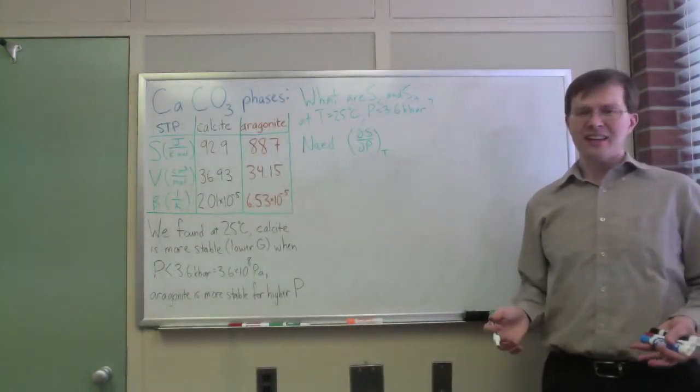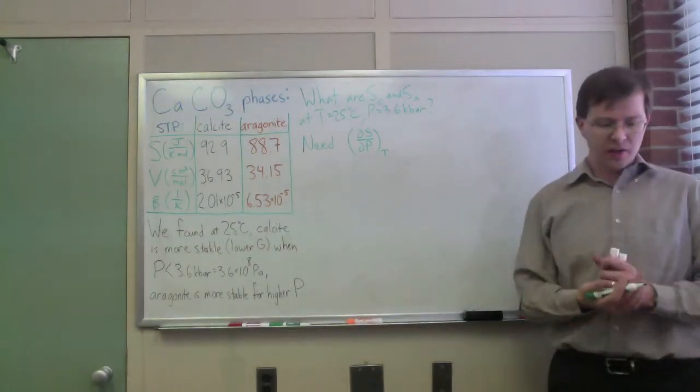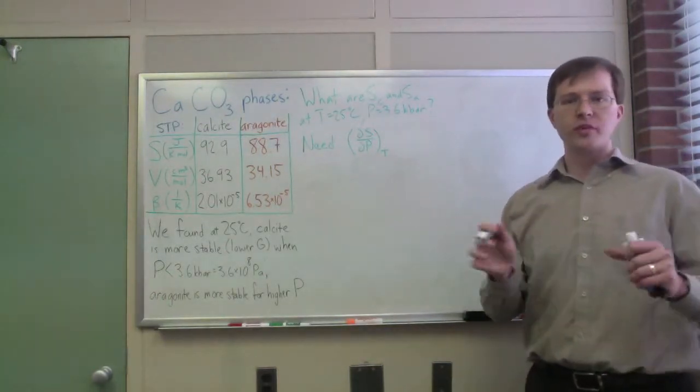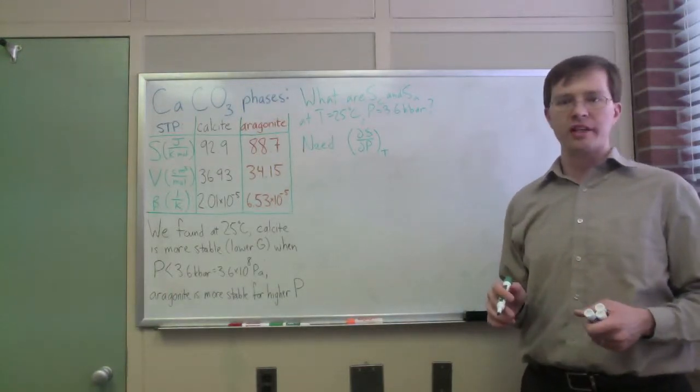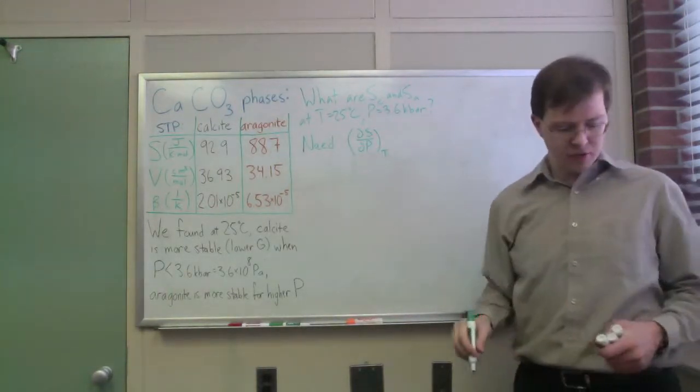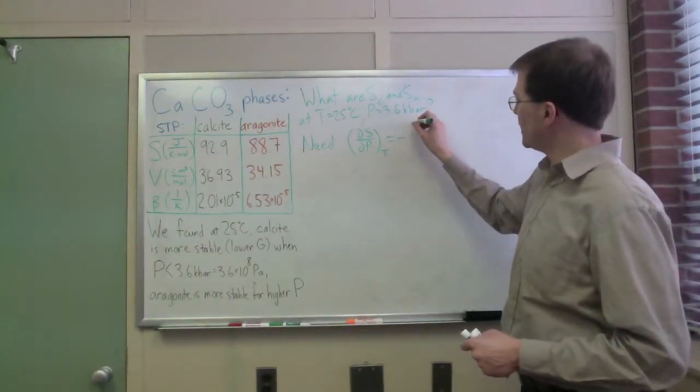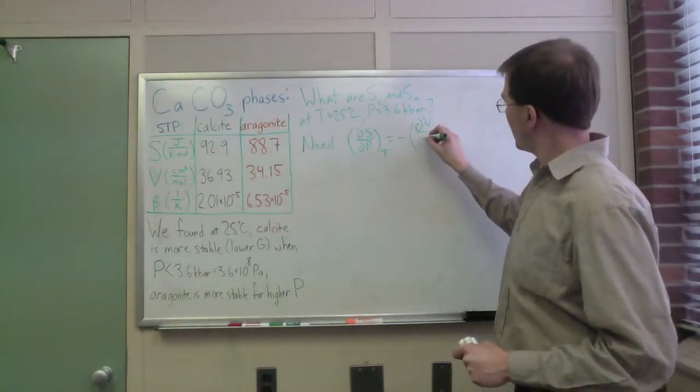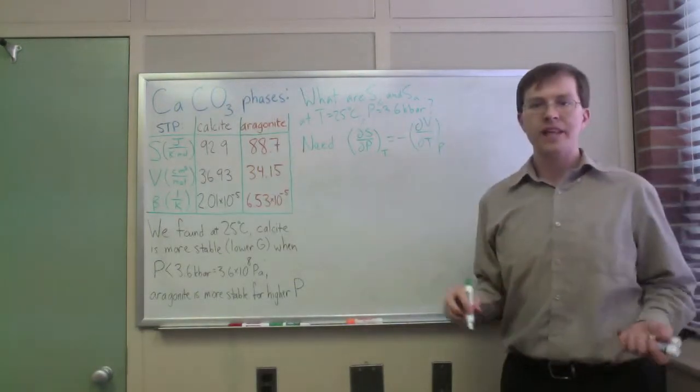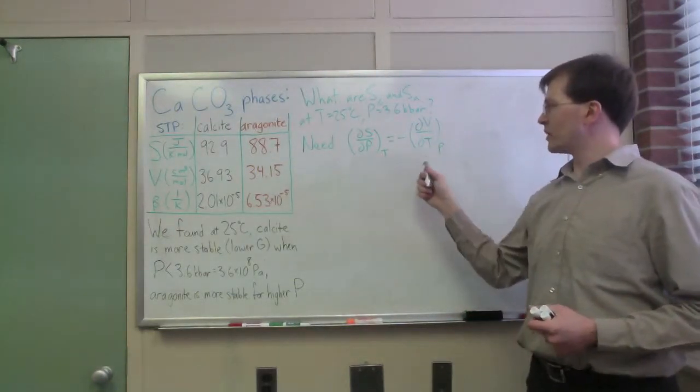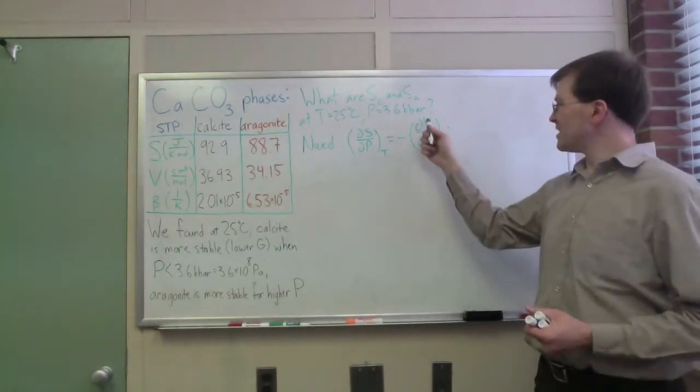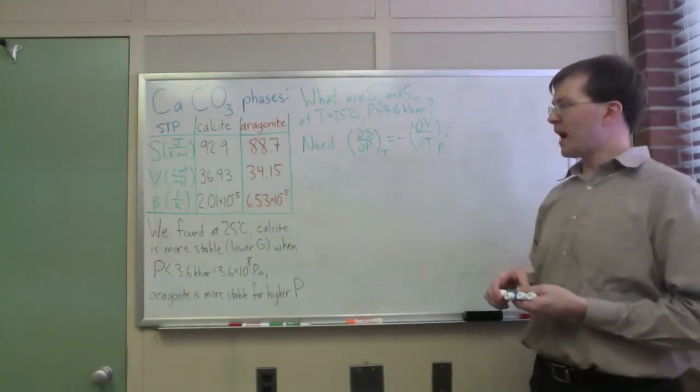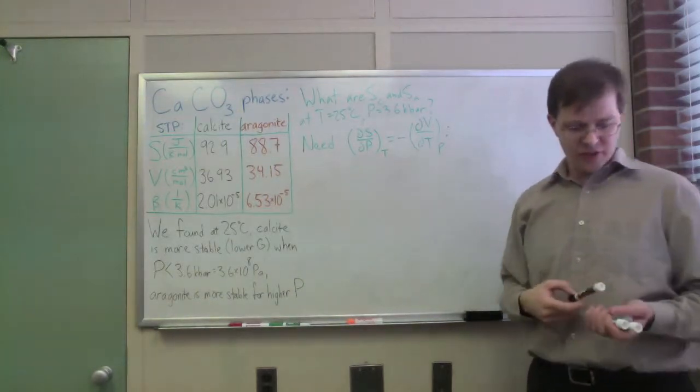What luck—in our class we solved a problem where we showed that dS/dP using a Maxwell relation from thermodynamic identities for the Gibbs free energy. We showed that dS/dP at constant temperature is equal to negative dV/dT at constant pressure. That's what we found—this is one of the Maxwell relations.